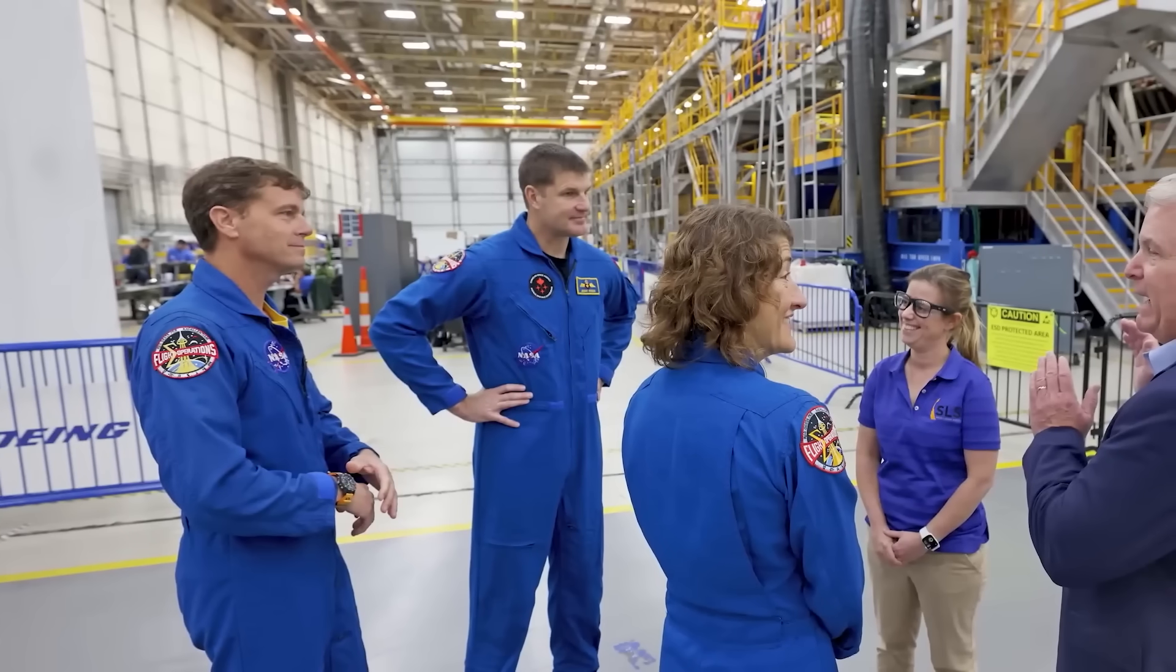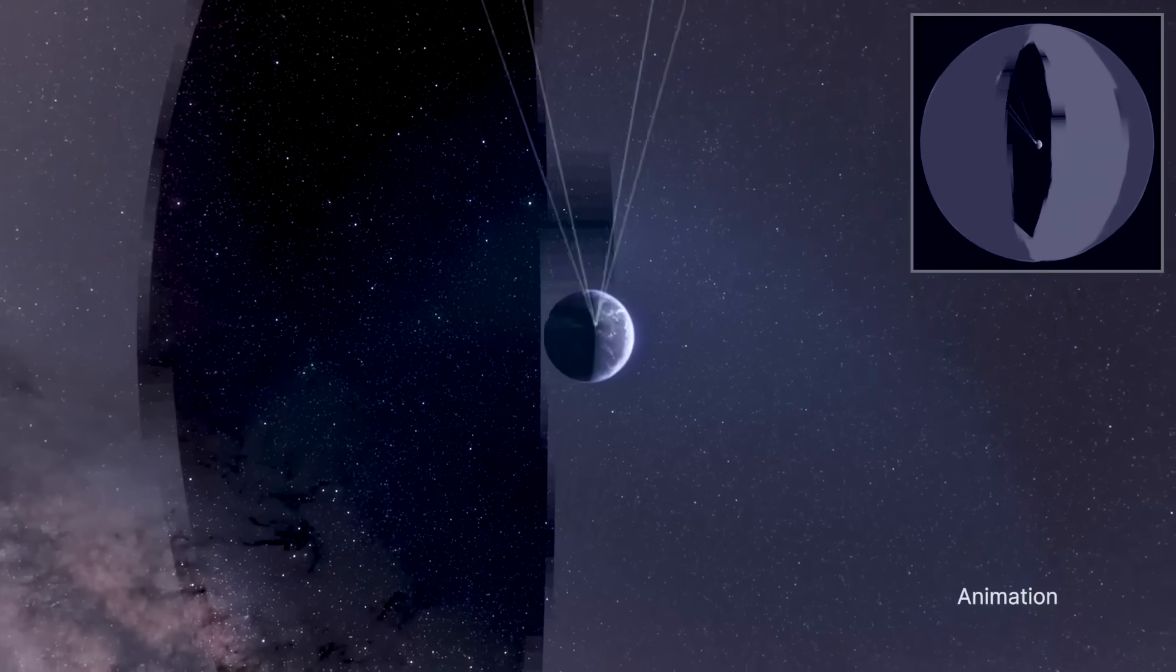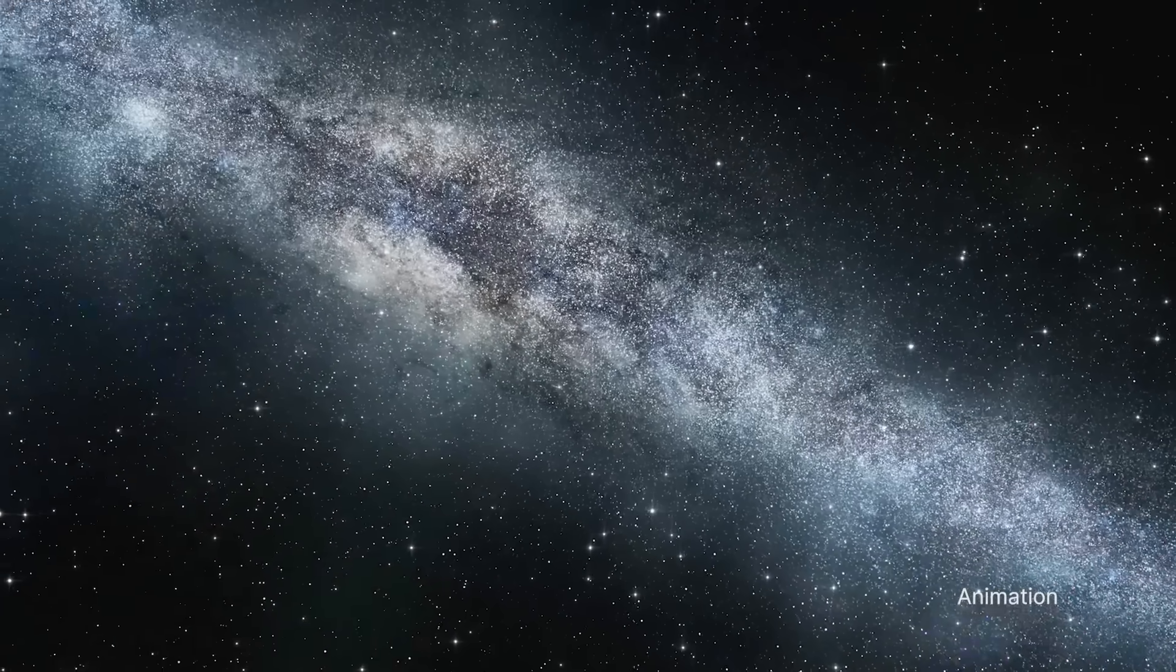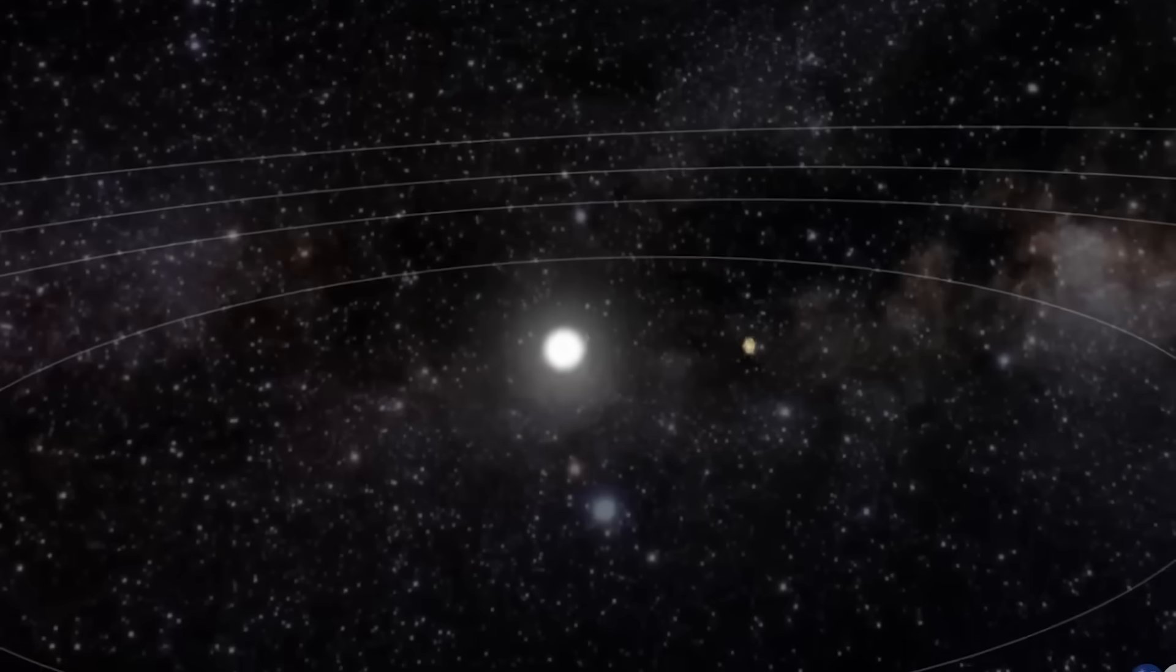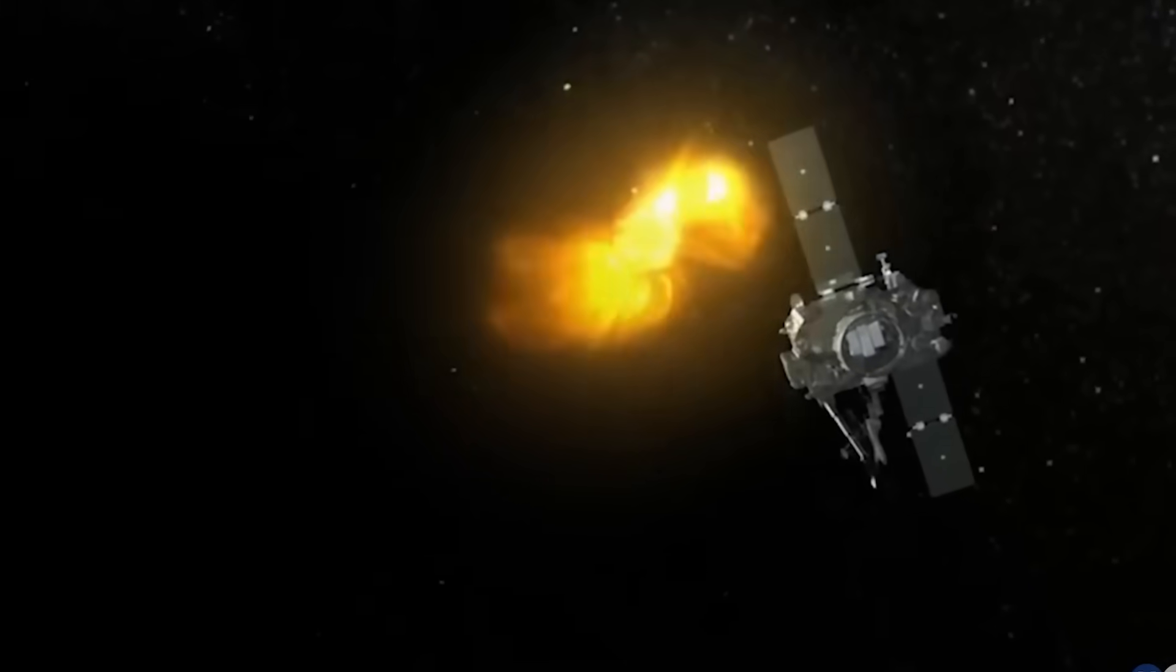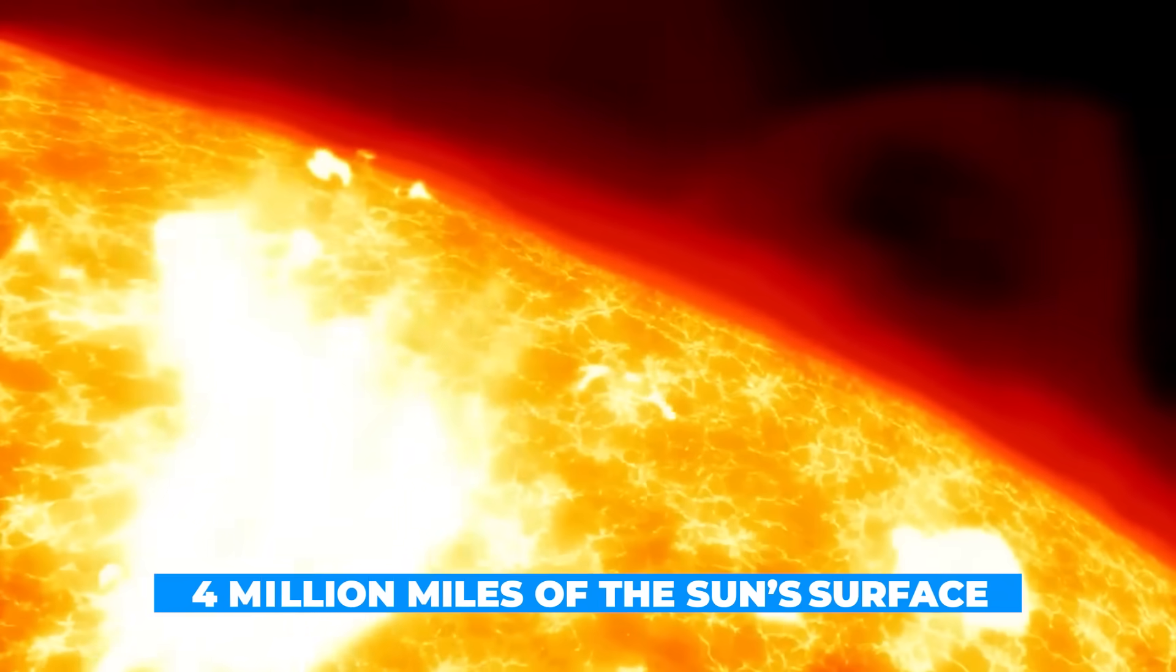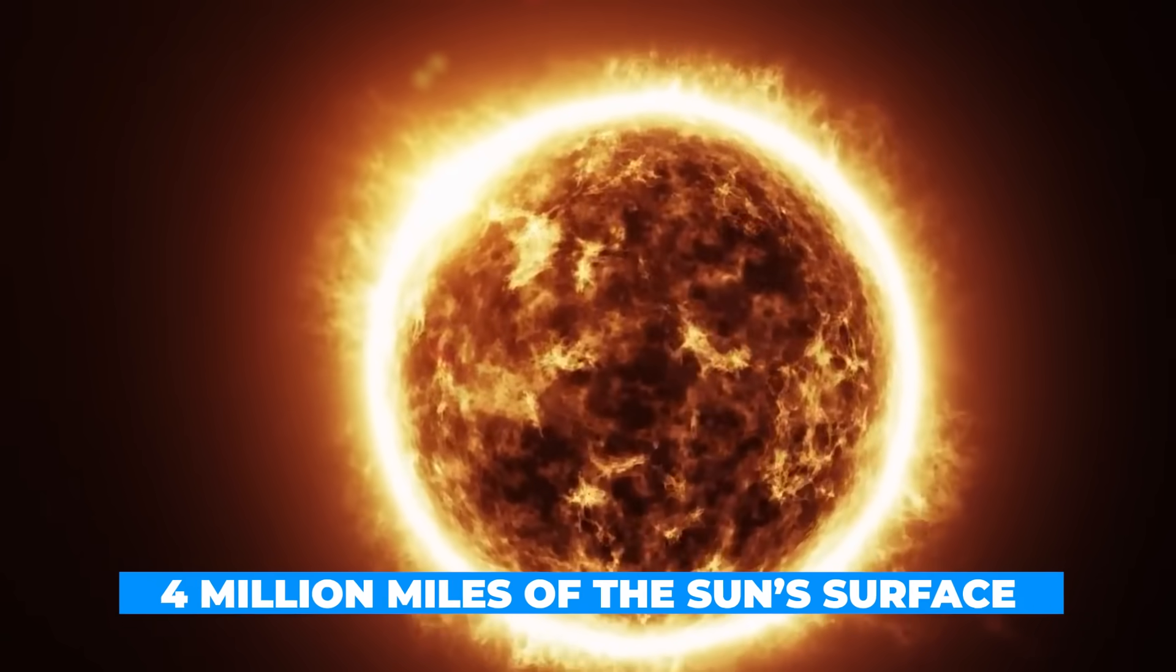And here's where things get even more concerning. Some experts now believe we may need to prepare for more extreme solar activity in the near future. The Parker Solar Probe is far from finished. It's still on course for even closer flybys, with future passes expected to bring it within just 4 million miles of the sun's surface. Closer than any spacecraft in history.